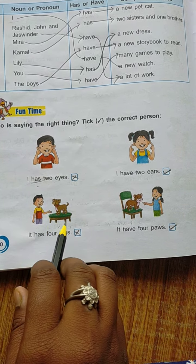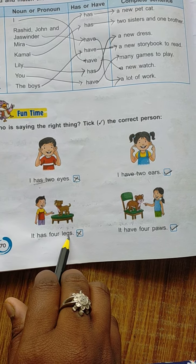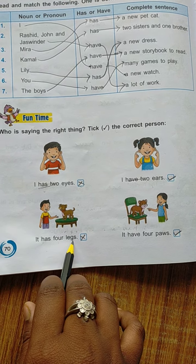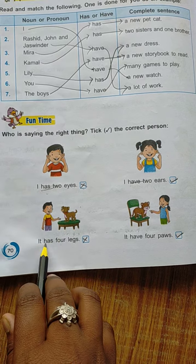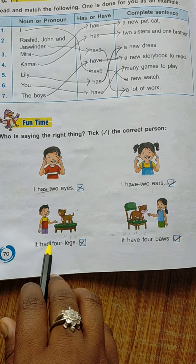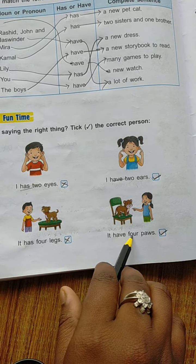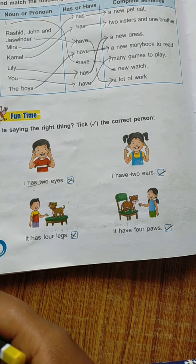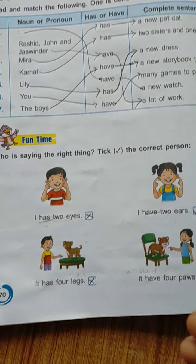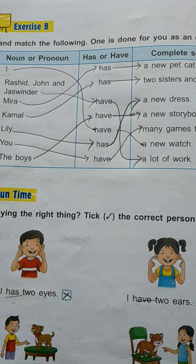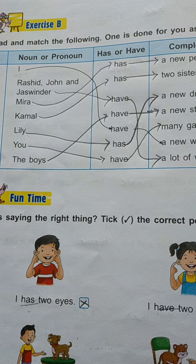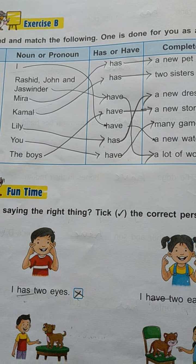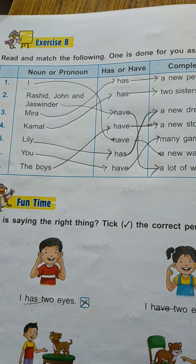I have four legs — wrong, because it is legs — four legs, not a single leg. Has use किया इसने, so it is wrong. I have four paws — it is correct. मेरे पास four पंजे हैं, so it is correct. हमेशा plural के सामने have का इस्तमाल करते हैं, और जहाँ पर singular noun होगा वहाँ पर has का इस्तमाल करते हैं। So hope you all understand this chapter.